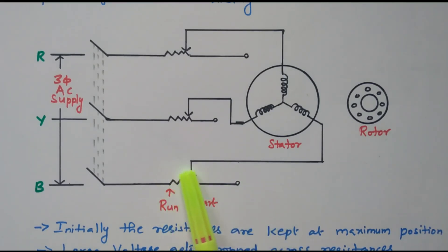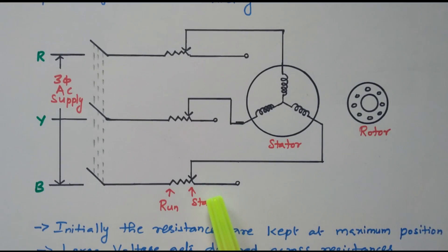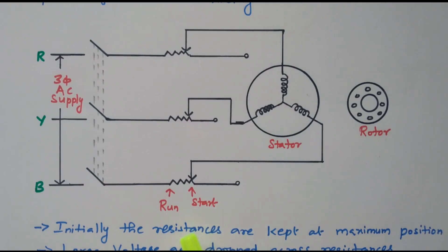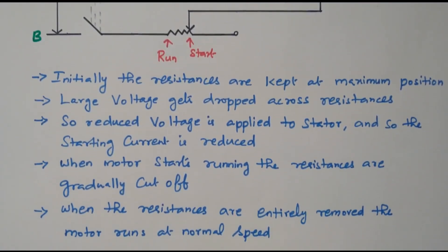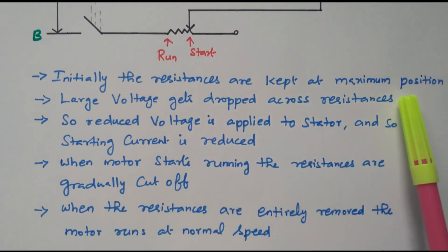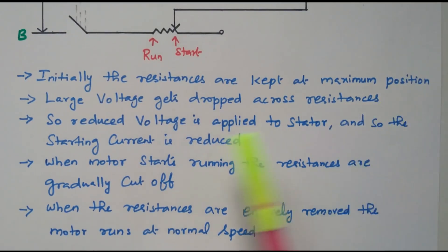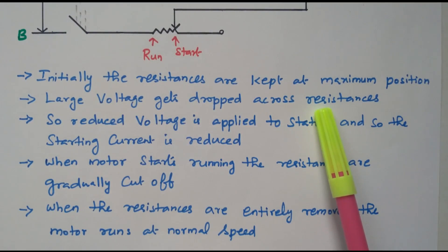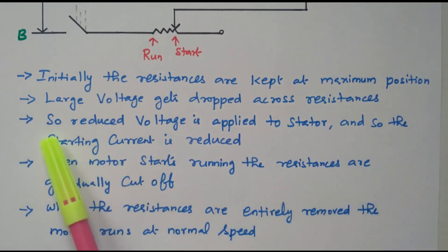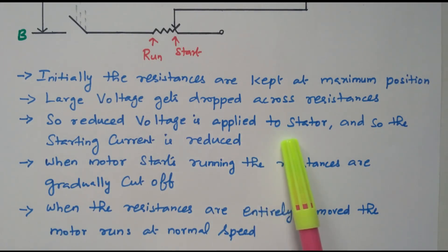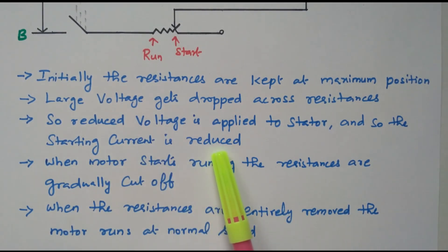Finally, the full rated voltage is applied and full rated current is taken by the stator. Initially the resistors are added so that the voltage applied to the stator is limited in order to limit the high starting current. Thereafter the resistors are slowly decreased, the voltage gradually increases, so that the current taken by the motor also increases. The main objective is: because of the reduced voltage, the starting current is also reduced.